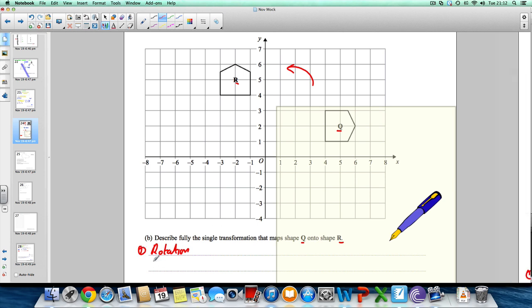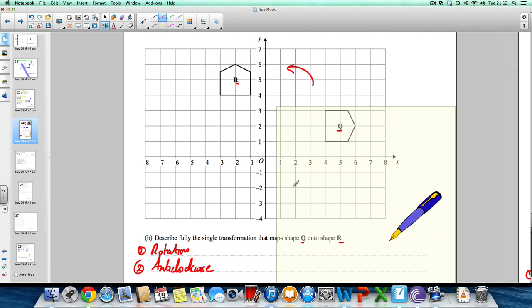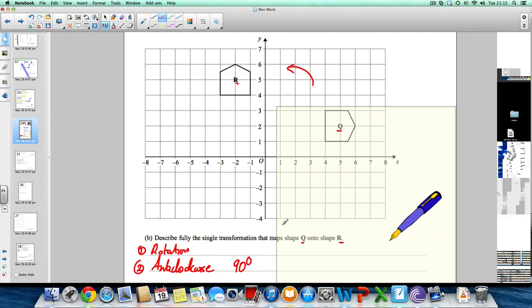Then, by how much? Well, you're going anticlockwise, and you're also going 90 degrees. So 90 degrees anticlockwise. The last thing you've got to state is the center of enlargement.